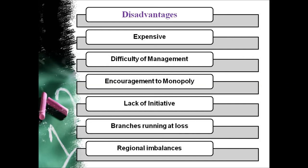In branch banking there is a lack of initiative. Branches suffer from a complete lack of initiative on important banking problems. No branch can take decisions on important problems without consulting the head office. Consequently, branches find themselves unable to carry on banking activities in accordance with the requirements of the local situation. This makes the banking system rigid and inelastic in its functioning. This also leads to red tapism, meaning official delay.